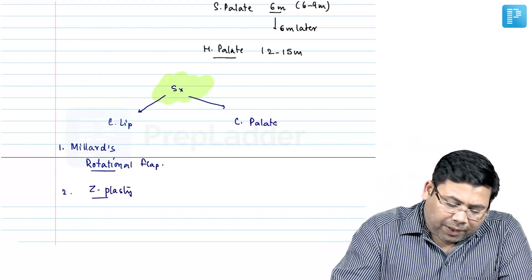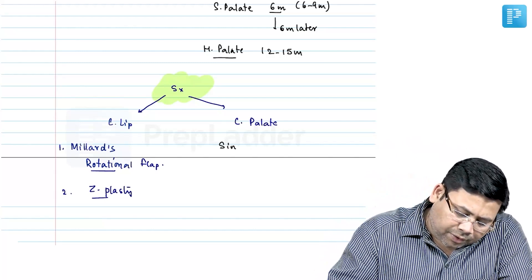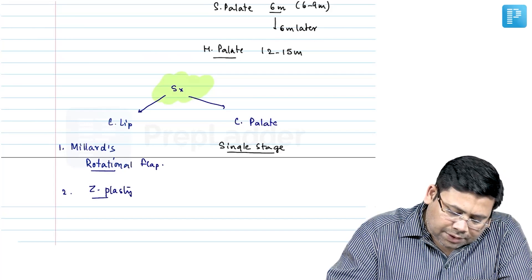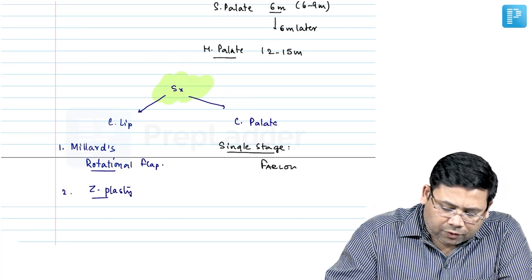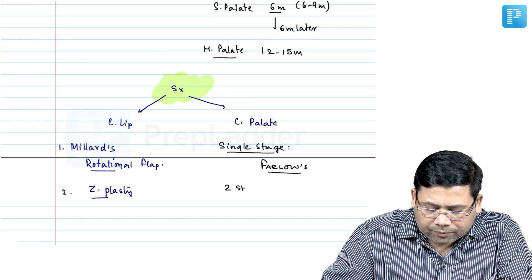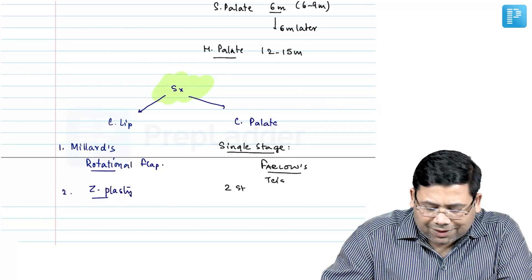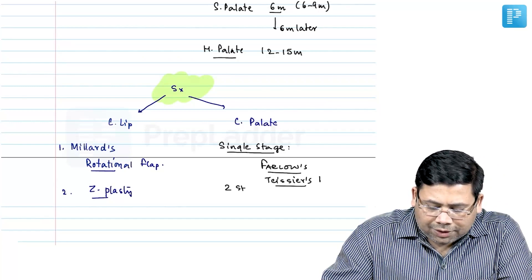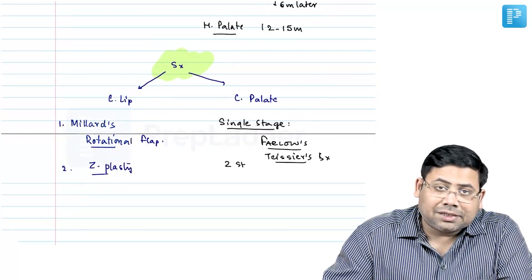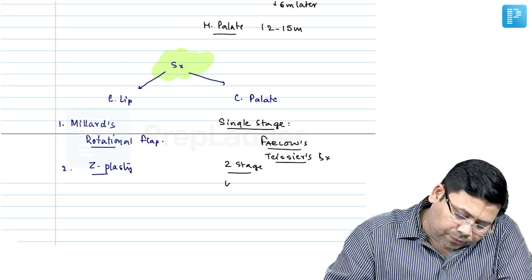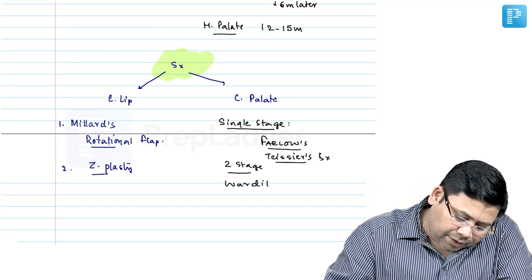When we talk about cleft palate, we have a single stage repair. When you talk about the single stage repair, that is Farlows. Farlows is a single stage repair. And when we talk about two stage repair, we have Farlows also and we have TCRs also. Remember TCRs flap, TCR surgery is for this and TCRs flap is a flap for eyelid reconstruction. Two stage repair, if you talk about, we have Wardle-Kilner.